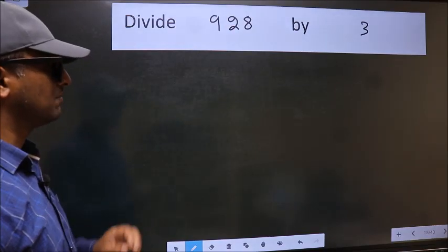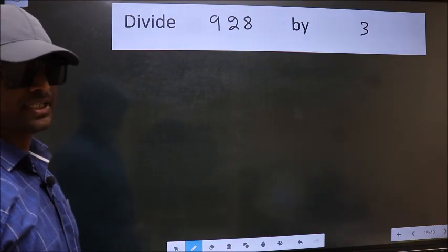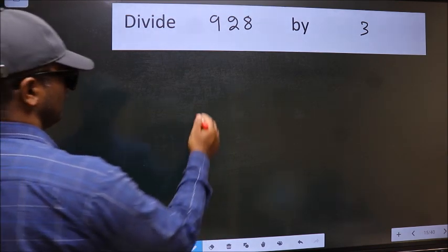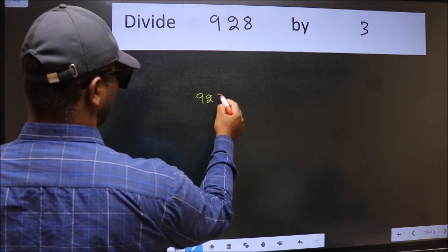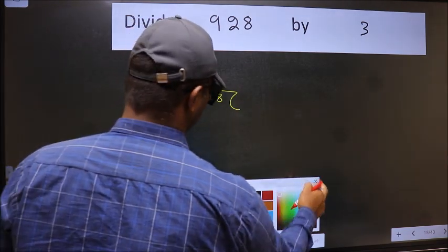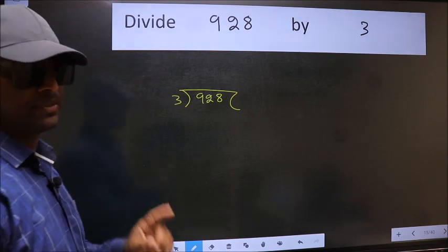Divide 928 by 3. To do this division, we should frame it in this way. 928 and 3 here. This is your step 1.